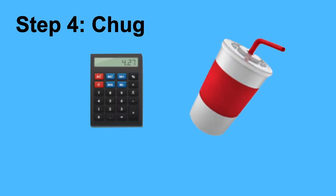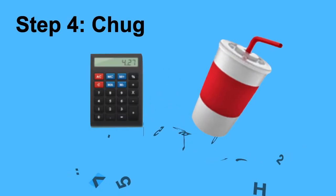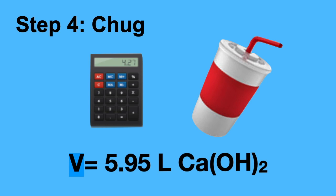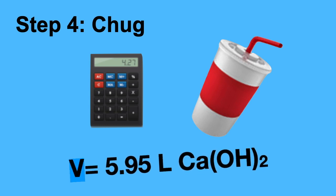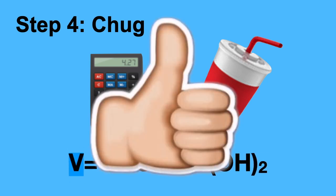Step 4, you chug. Grab your calculator and punch in the numbers. V equals 5.95 liters of calcium hydroxide. That's it for this video. If you enjoyed it, don't forget to subscribe and give it a thumbs up. Thanks for watching.